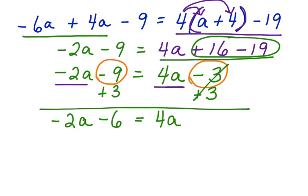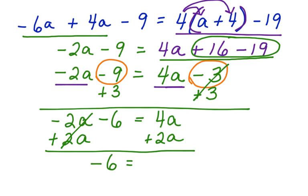Now we want to get the variables on the same side. So we're going to move the negative 2a. We do that by doing the inverse. We add 2a to both sides. These cancel. Bring down the negative 6 equals 6a. Wait, 4a plus 2a is 6a. Negative 6 equals 6a.